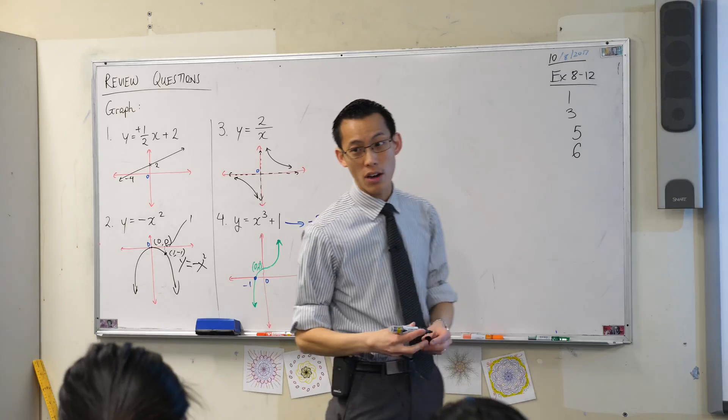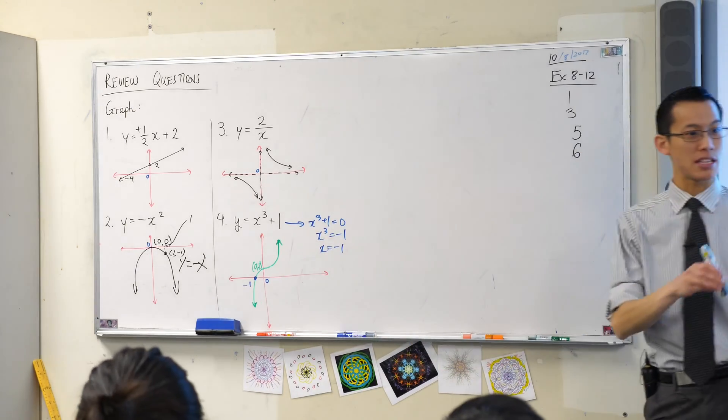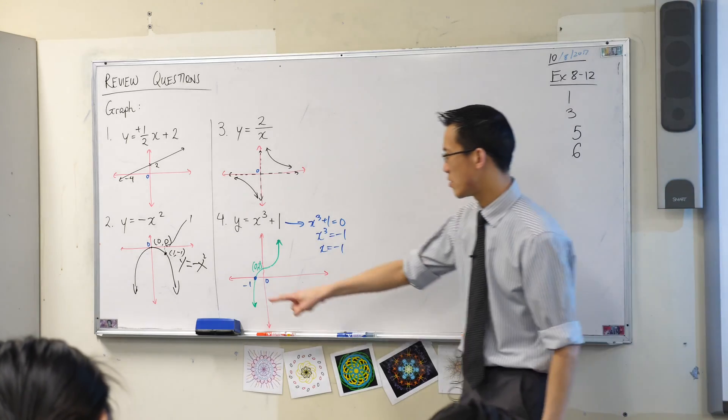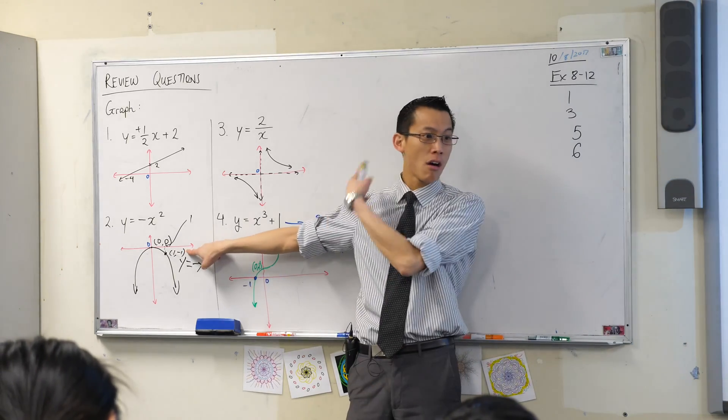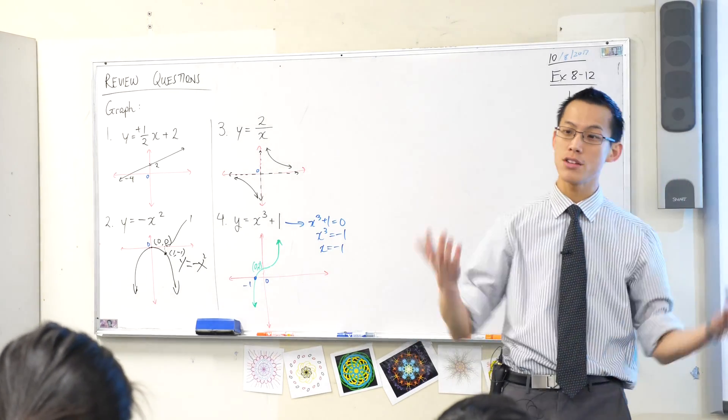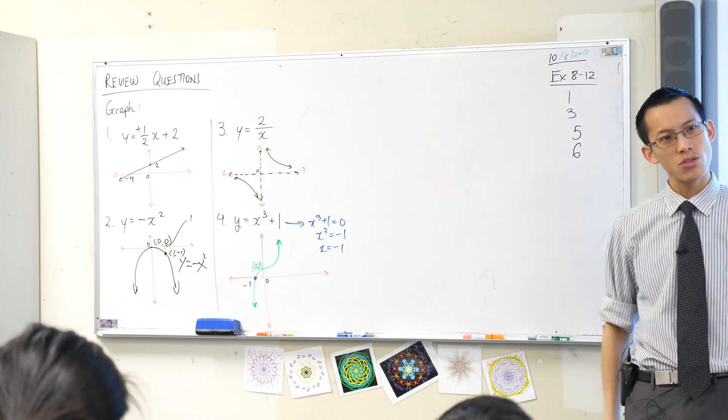It never collides with any of the axes, so there are no intercepts to find. That's kind of nice. Less work. But it does mean I need one of these guys, right? Because I've got no idea if this is 2 over x, or 1 over x, or 500 over x. So what point would you like me to put on there?